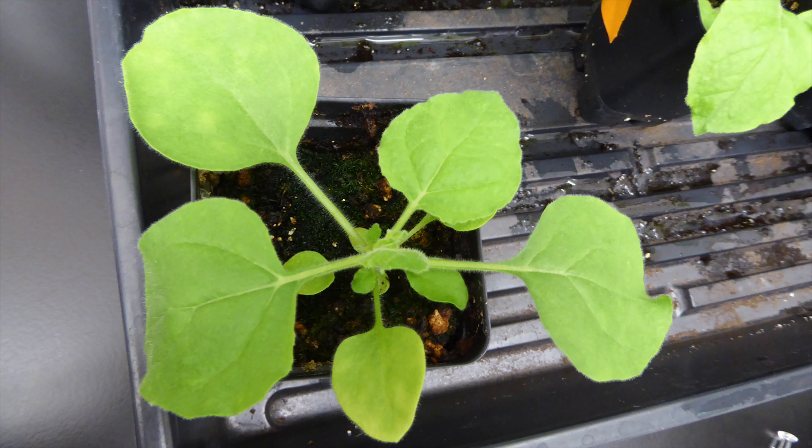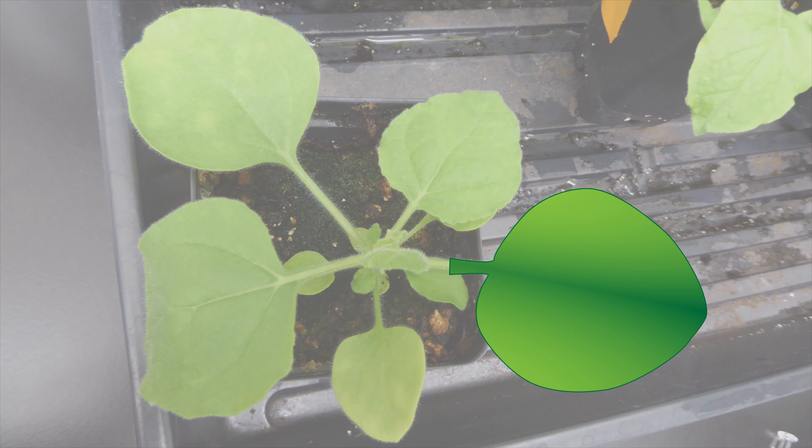When scientists have identified a gene of interest, they can check what it does by putting it in a tobacco leaf. No, not that kind of tobacco, but it's in the same genus. Young tobacco plants have large, flat leaves that are easy to use for this kind of experiment.